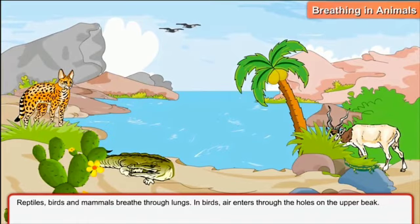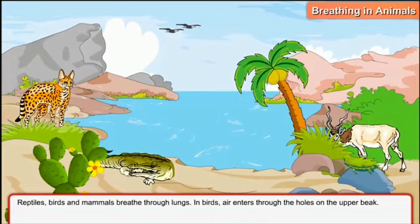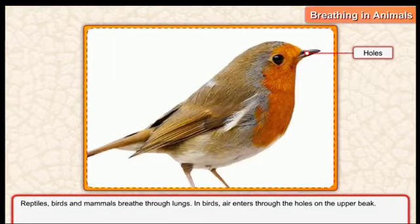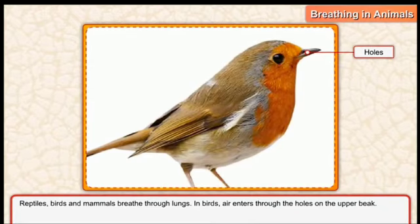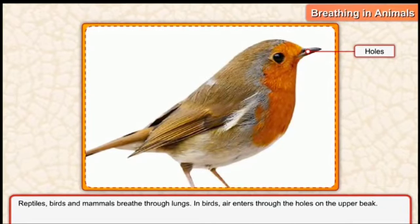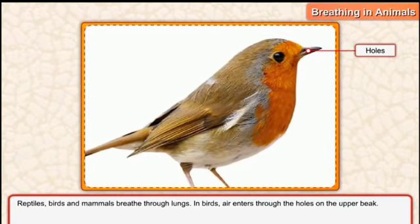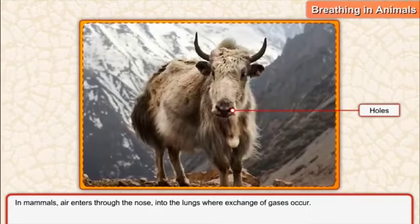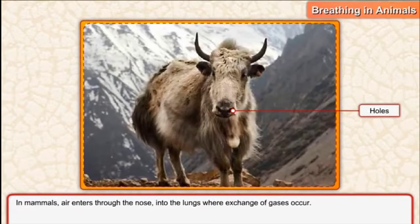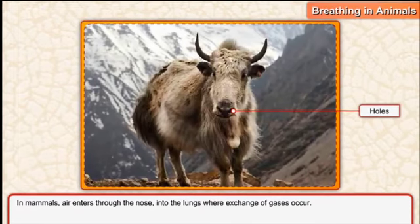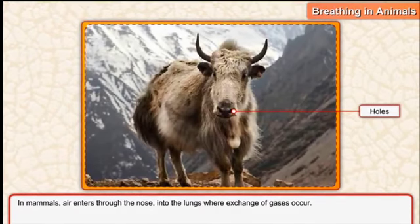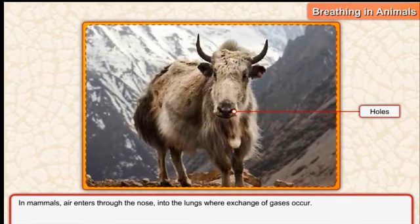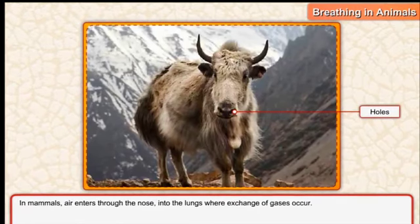Reptiles, birds and mammals breathe through lungs. جو reptile, bird and mammal ہوتے ہیں ان میں lungs ہوتے ہیں — they breathe through lungs. In birds, air enters through the holes on the upper beak — as you can see, on the beak there is a hole present, and with the help of this hole air enters the body. Then in mammals, air enters through the nose into the lungs, where exchange of gases occurs.